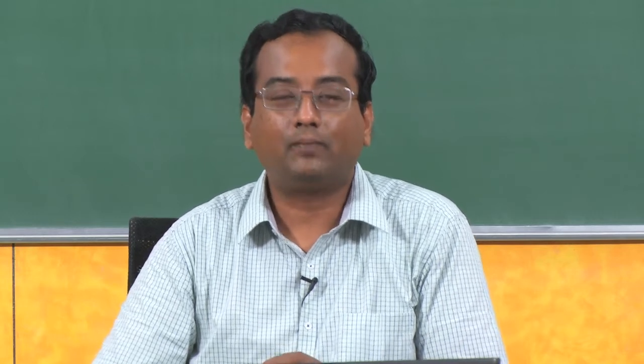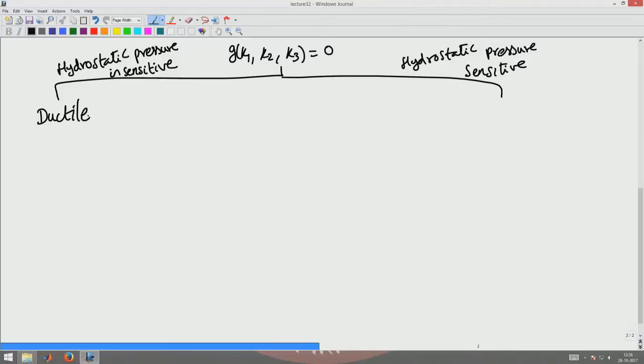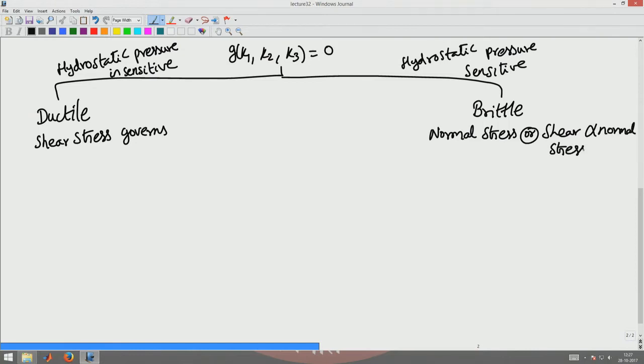In general, you associate hydrostatic pressure insensitive materials to what is called as a brittle mode of failure. The difference is in ductile mode of failure the shear stress governs. In brittle material mostly normal stress or to a certain extent shear and normal stress can govern failure.